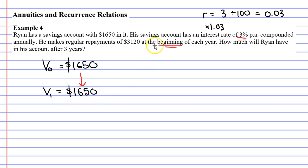What we do when the repayment is made at the end of the year. I'm going to write this in green because this is the wrong calculation. Normally we would take our previous result and increase it by 3% by multiplying it by 1.03. This is because we have an interest rate of 3%. After doing that we then add on our repayment of $3,120.